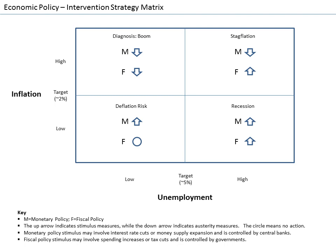Macroeconomics and microeconomics, a pair of terms coined by Ragnar Frisch, are the two most general fields in economics. In contrast to macroeconomics, microeconomics is the branch of economics that studies the behavior of individuals and firms in making decisions and the interactions among these individuals and firms in narrowly defined markets.